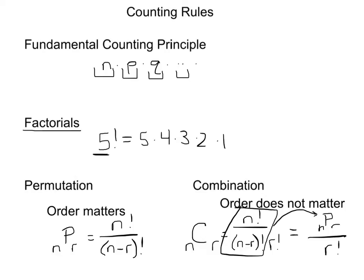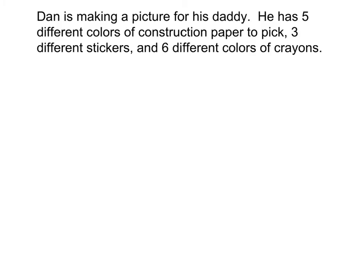So let's look at these in action. First of all, the fundamental counting principle. When we talk about the fundamental counting principle, so in this case, Dan is making a picture for his daddy. He has 5 different colors of construction paper. He's got 3 stickers, and he's got 6 different crayons.